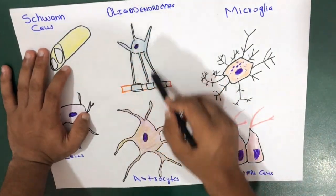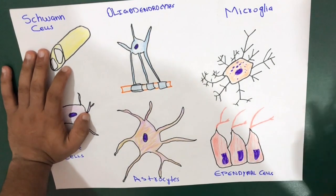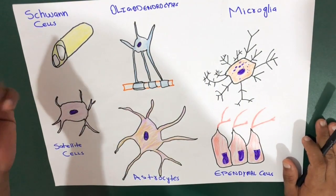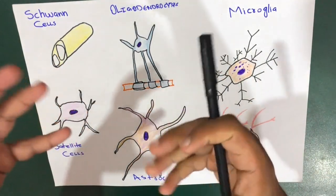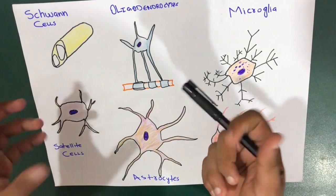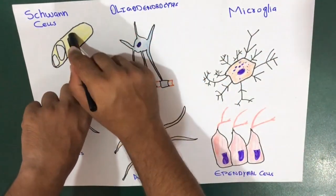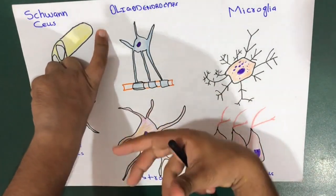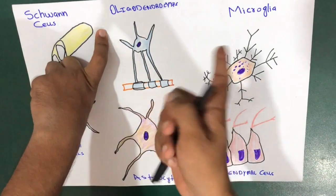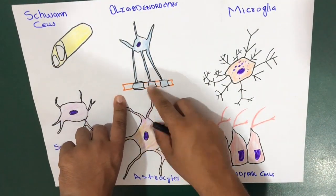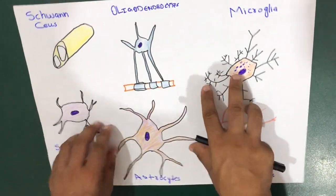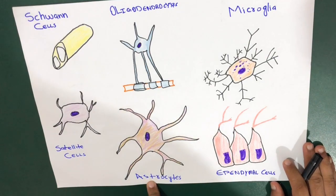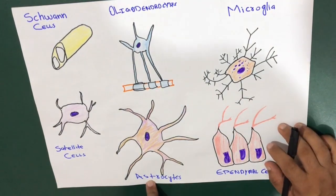Now let's move to the neuroglial cells of the central nervous system, starting with oligodendrocytes. Just as Schwann cells myelinate axons in the peripheral nervous system, oligodendrocytes perform the same function in the central nervous system — they myelinate the axons of CNS neurons and provide an overall structural framework.